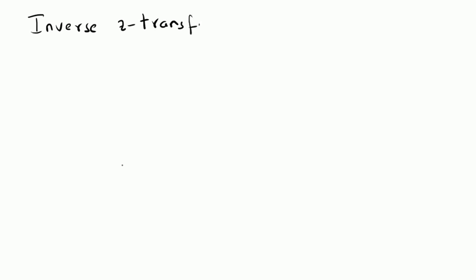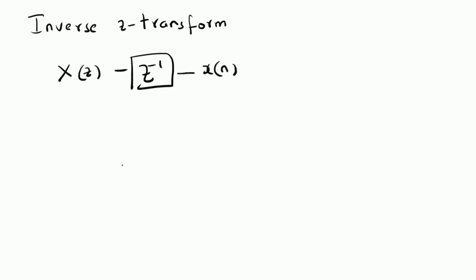We are going to look at the inverse Z-transform. Given a Z-transform X of Z, we want to derive the time domain sequence X of n. We want to apply the inverse Z-transform on the given Z-transform to obtain the time domain sequence X of n. X of n is the time domain signal or sequence.